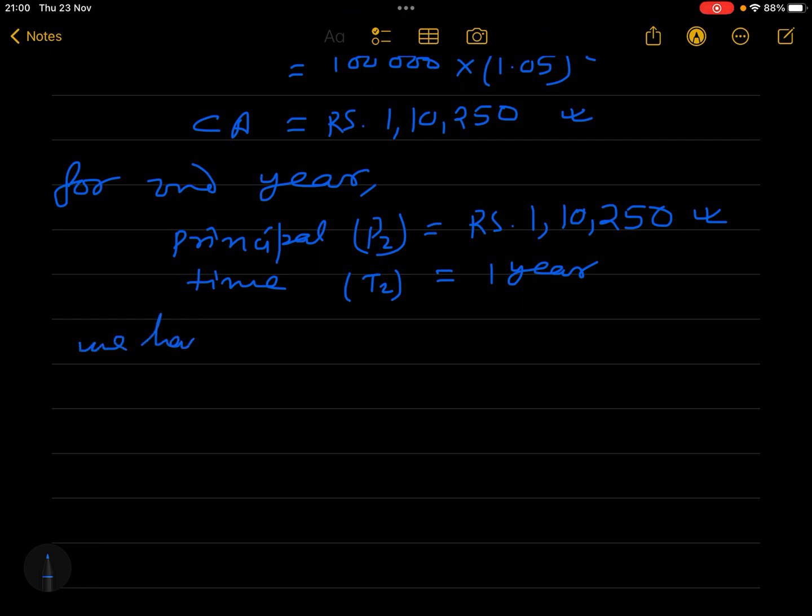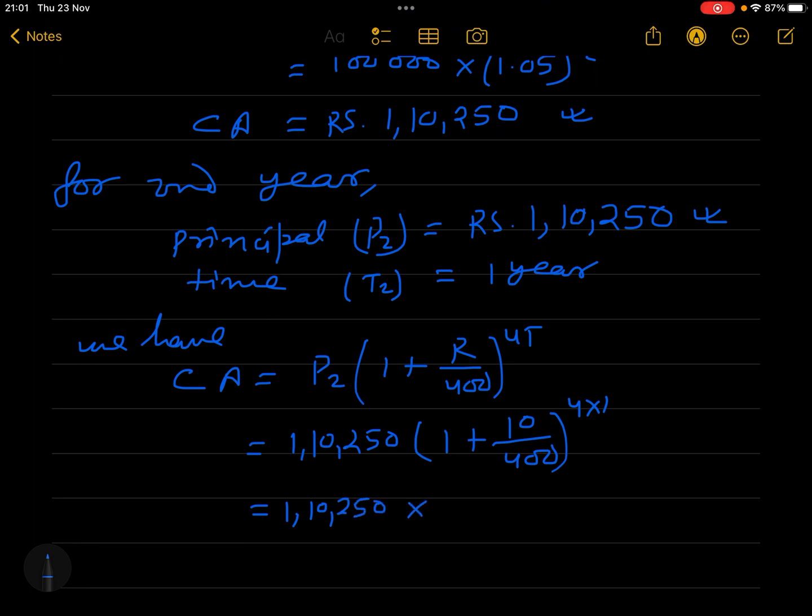We have CA is equal to P2 times (1 plus R by 400) to the power 4T. This is the quarterly compound interest formula. So P2 is 1,10,250, bracket (1 plus 10 by 400) to the power 4. This you can calculate now.